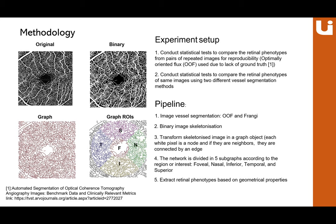The analysis pipeline begins with vessel segmentation using OOF or Frangi, producing a binary image that is then skeletonized. The skeletonized image is transformed into a graph object, and the network is divided into five sub-graph regions of interest: foveal, nasal, inferior, temporal, and superior. Retinal phenotypes based on geometrical properties are then extracted from these regions.